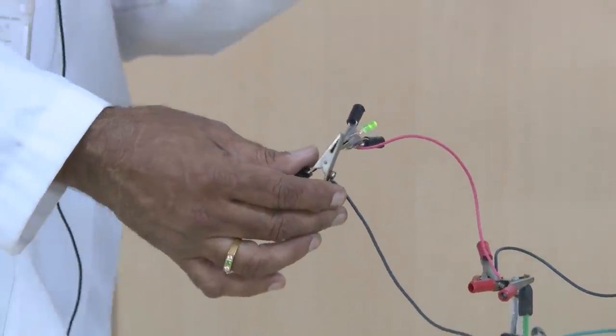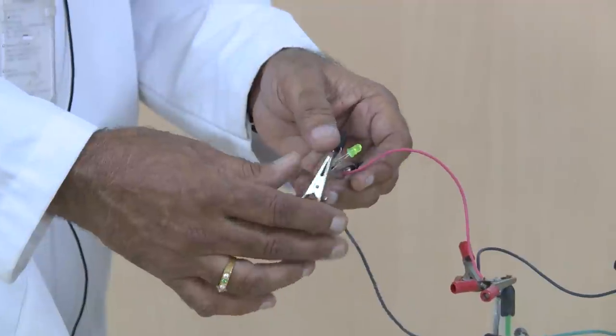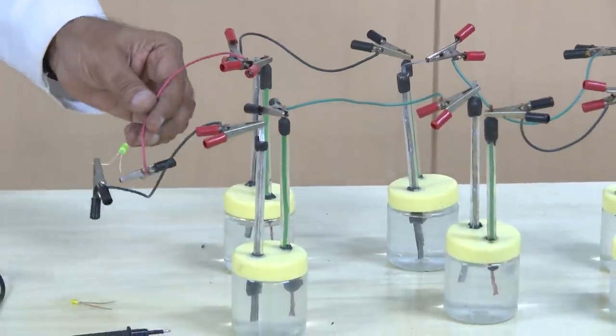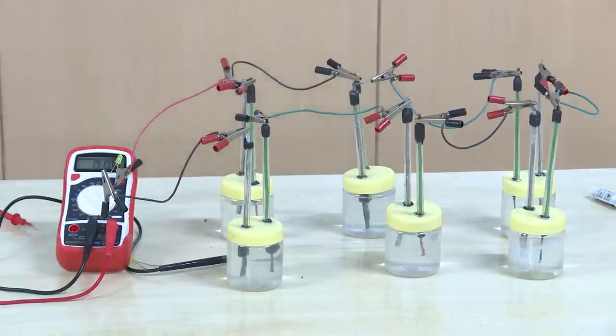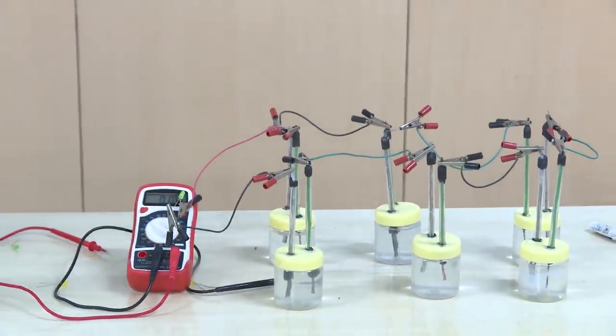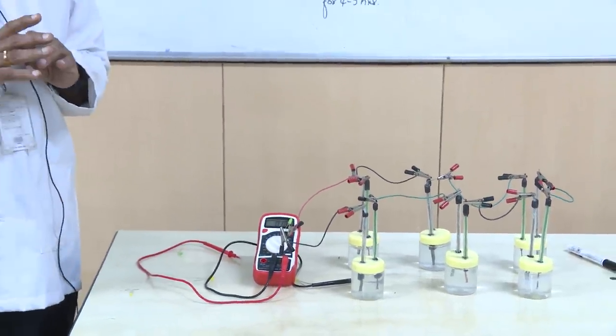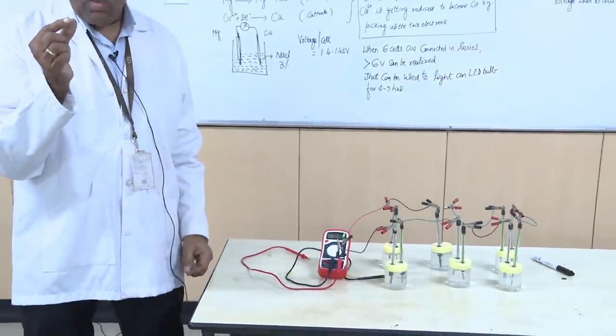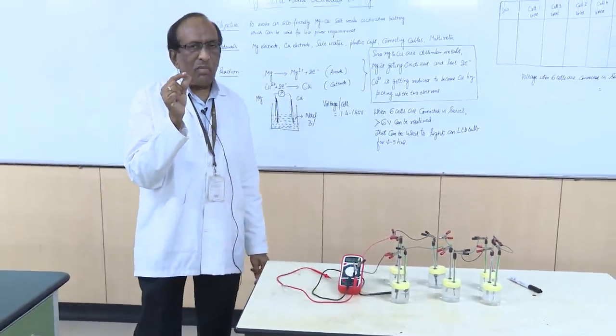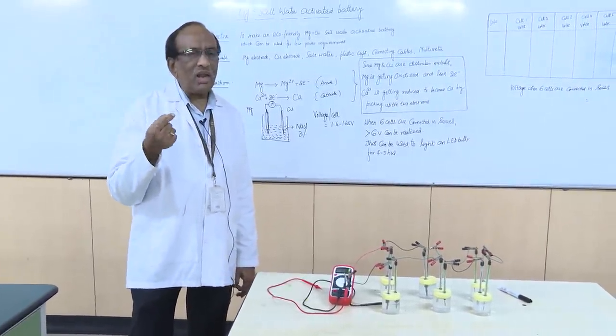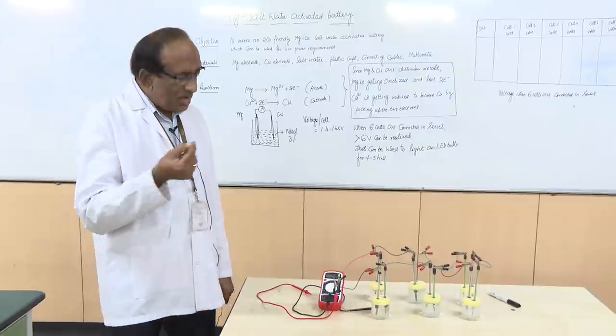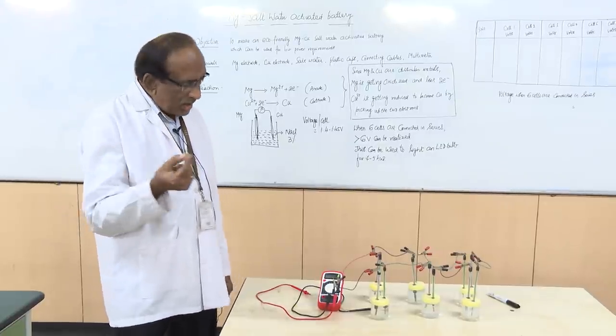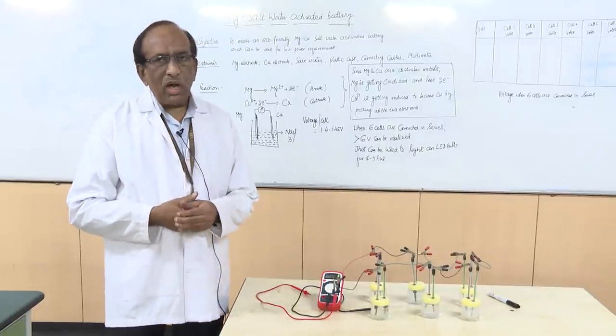Once the voltage of each cell falls down, that is when magnesium is getting consumed, then the voltage will fall down and when the voltage comes to below 1.2 volts, the light will stop. And you can also run a small fan with a small motor. These are all things which are used in small dolls and other gadgets for cooling purposes.